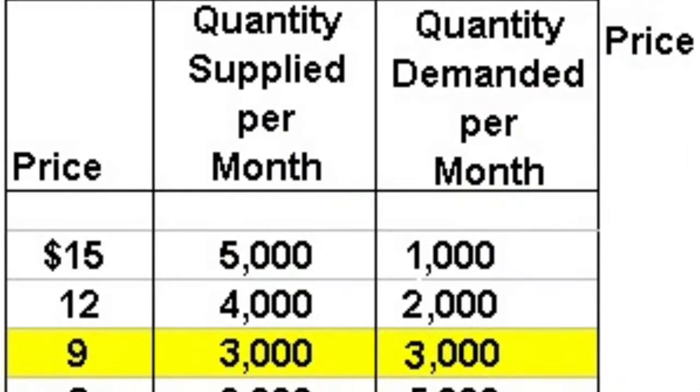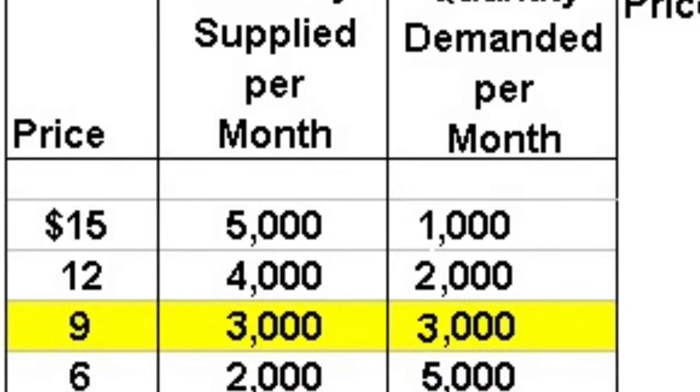The quantity demanded is the specific amount of a product that consumers will buy at a given price. Similarly, the quantity supplied is the specific amount of a product that a business will supply at a given price.